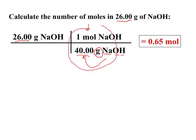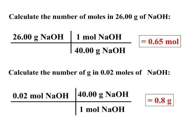This conversion factor allows you to convert grams of sodium hydroxide to moles of sodium hydroxide. You can also use the reverse of that same conversion factor — if given moles of sodium hydroxide, simply set it up so that moles cancels, leaving you with grams of sodium hydroxide.